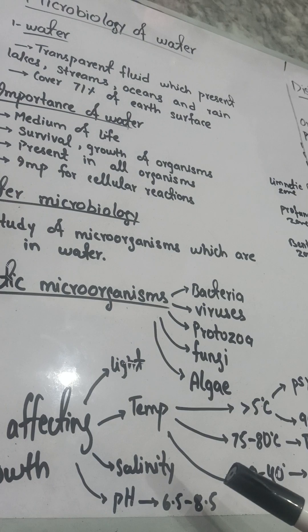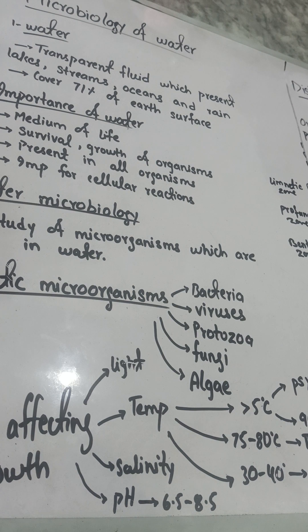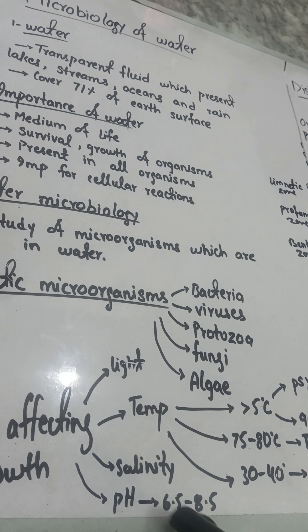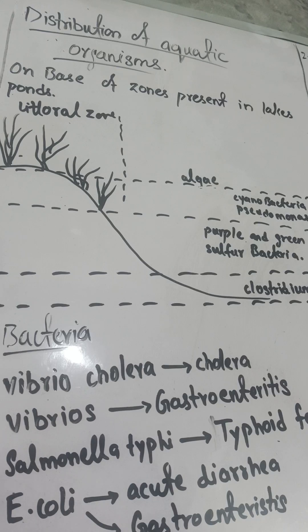The next factor is salinity, which means the concentration of salts present in the water. Most organisms are halophilic, meaning they need an optimum concentration of salt in the water. Ocean water contains a lot of salt, making it important for the growth of microorganisms. The pH for microorganisms should be from 6.5 to 8.5.